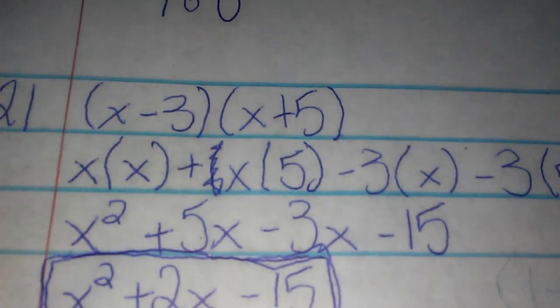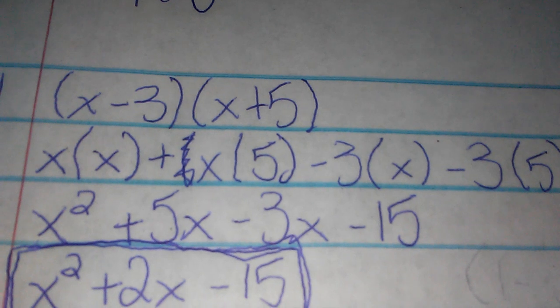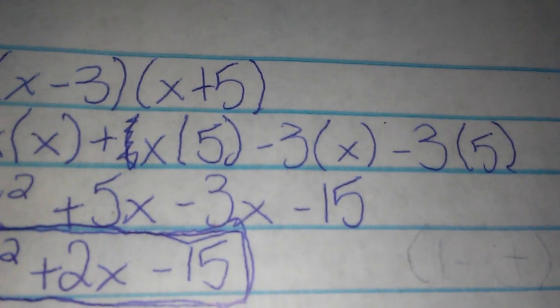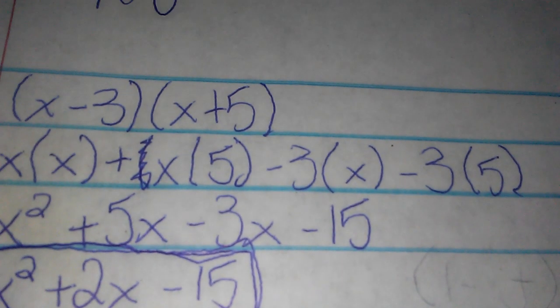So then I added those all together. x times x is x squared, x times 5 is 5x, negative 3 times x is negative 3x, and negative 3 times 5 is negative 15.